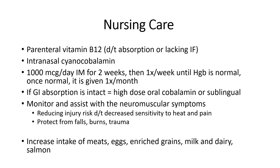If GI absorption is intact, patients can take high-dose B12 sublingual or orally. Monitor and assist with neuromuscular symptoms — reduce injury risk by protecting from falls, burns, and traumas, especially with paresthesia and reduced sensation. Increase dietary intake of meats, eggs, enriched grains, milk, dairy, and salmon. Without B12 replacement, patients can have a high mortality rate and die within one to three years.